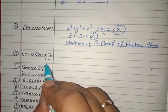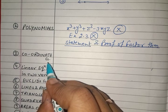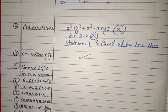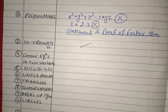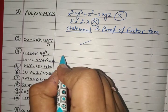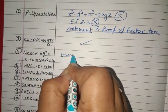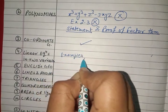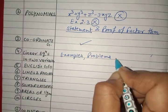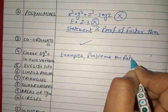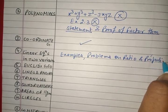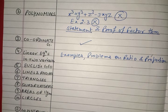Chapter 3, Coordinate Geometry, has no deletion — you need to do it completely. Chapter 4, Linear Equations in Two Variables: the things deleted are examples and problems on ratio and proportion. No need to do problems on ratio and proportion.